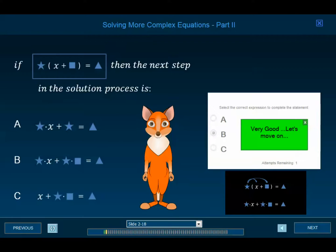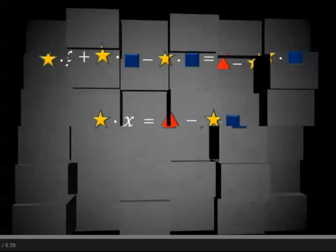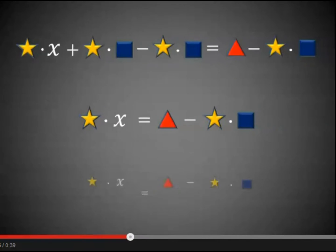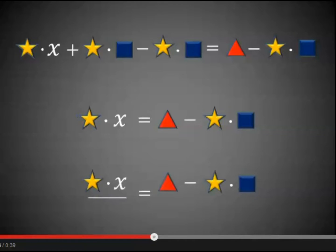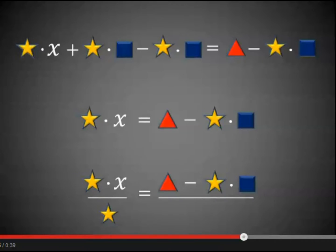If we are at this point in our solution process, our next step is answer B. Our next step is to divide the left-hand side of the equation by the star expression, and our rules say that we must do that to the right-hand side of the equation as well.